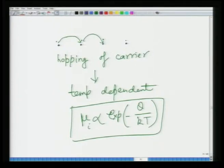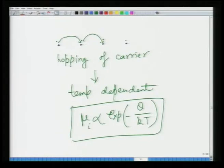Mobility in this case becomes temperature dependent in the form of exponential minus Q by kT, unlike in metals and semiconductors where it is proportional to T to the power minus 3/2, which is due to scattering. So the temperature dependence of mobility in metals/semiconductors versus ionic solids is due to different reasons.